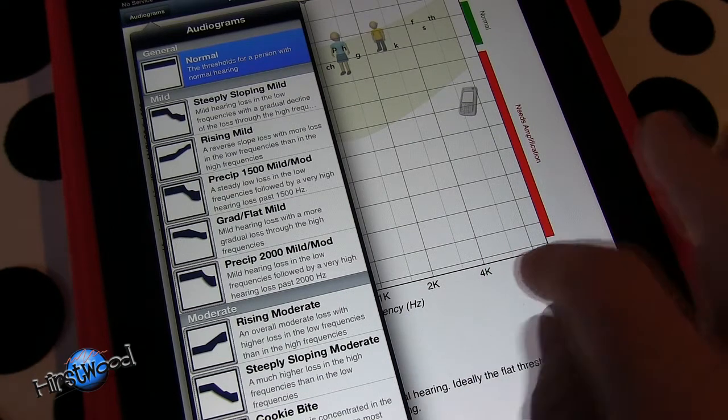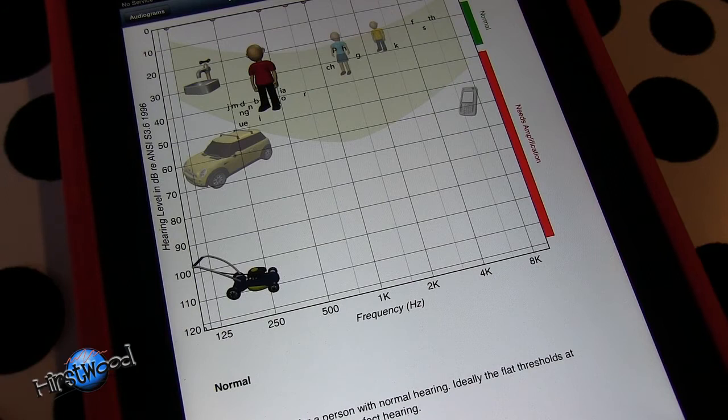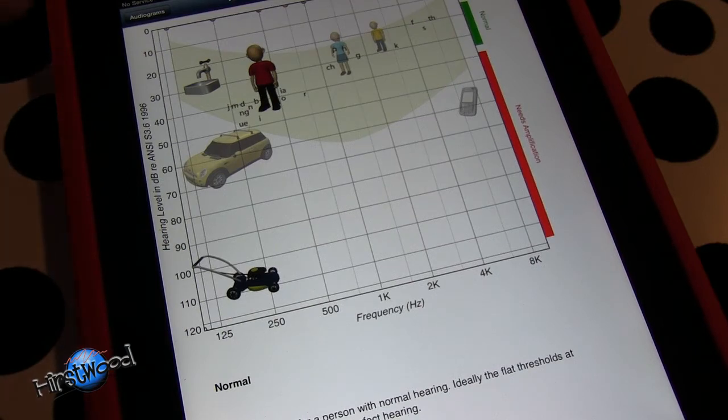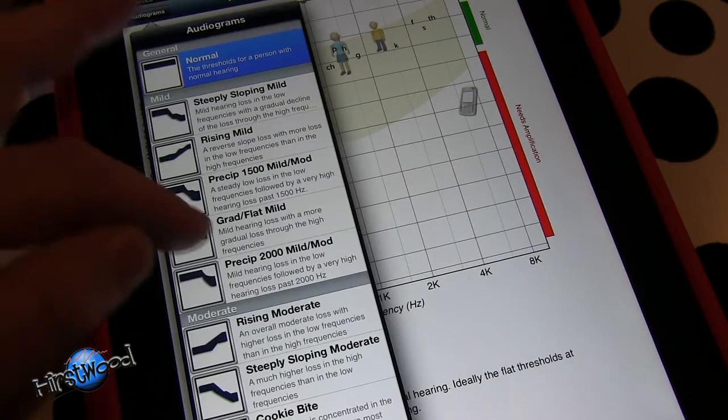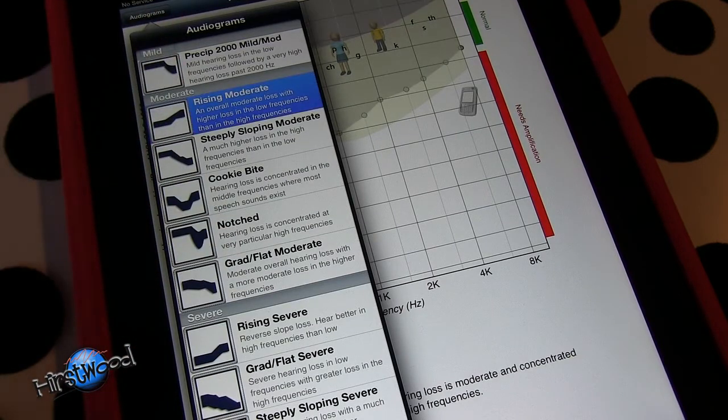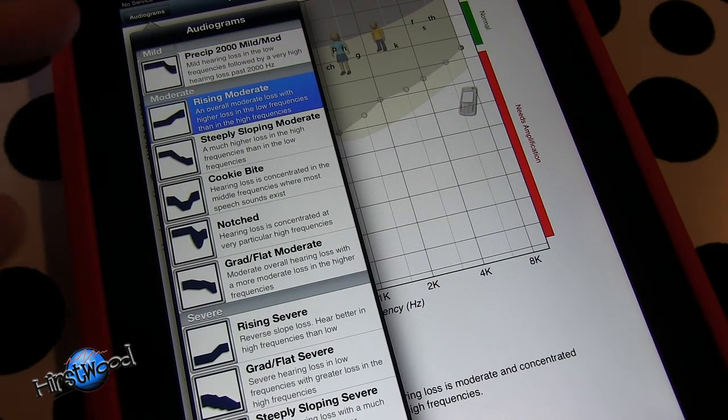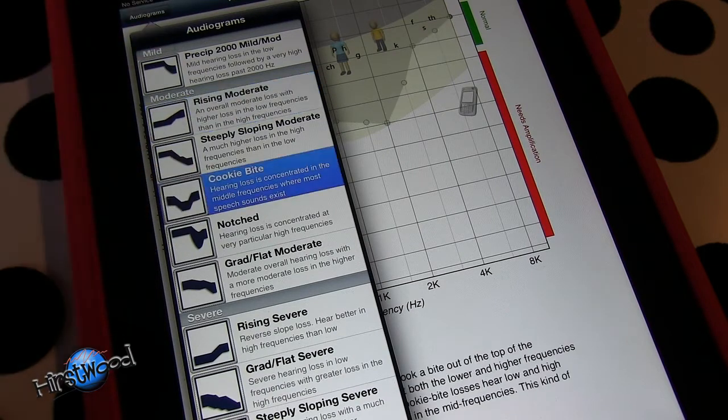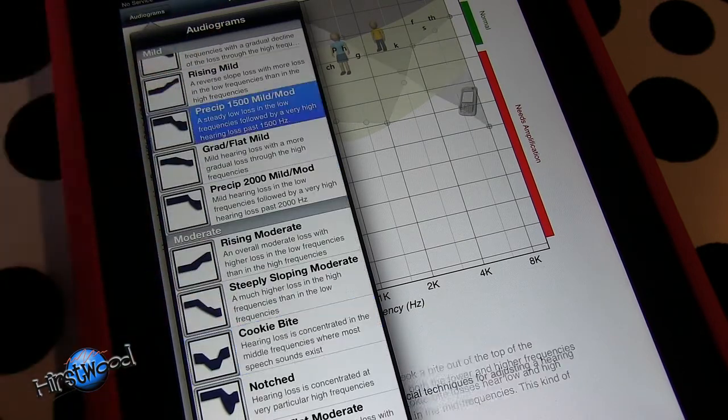A really good demonstration is the lawnmower, which is down here. I've got that going at the moment and that's making it pretty loud. Go back into these audiograms, let's go to rising moderate, and immediately you can tell that's quite a difference. You need to play around with these.